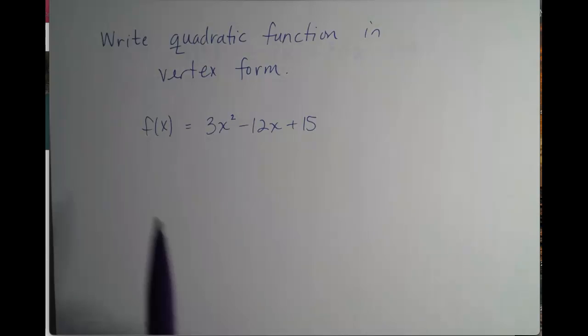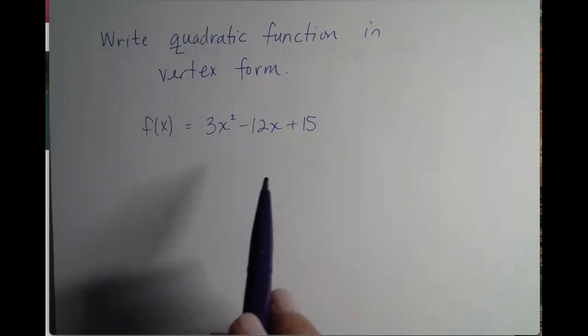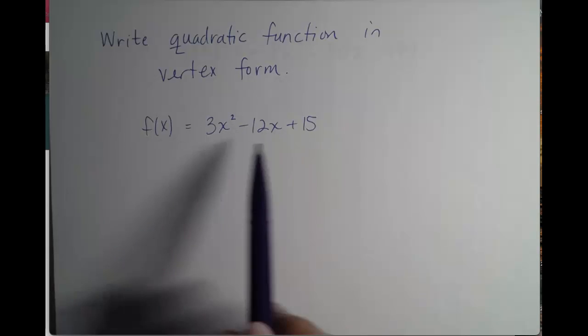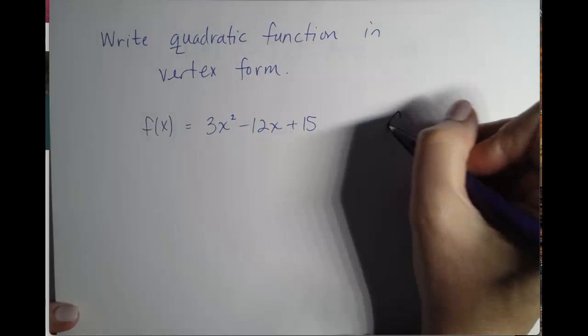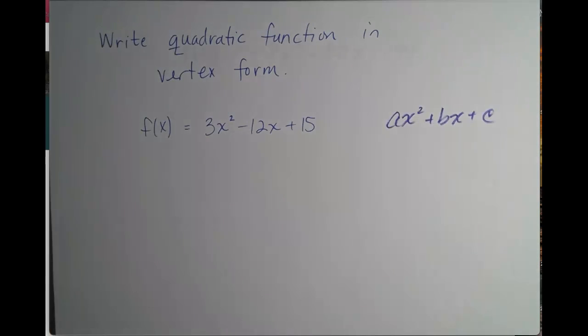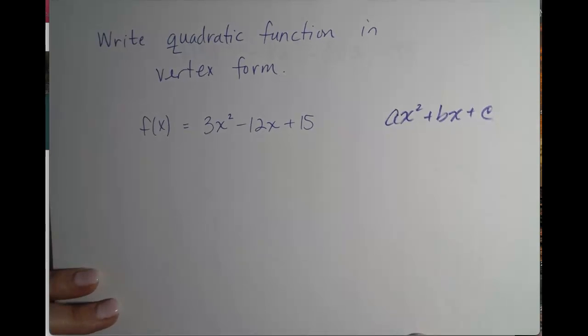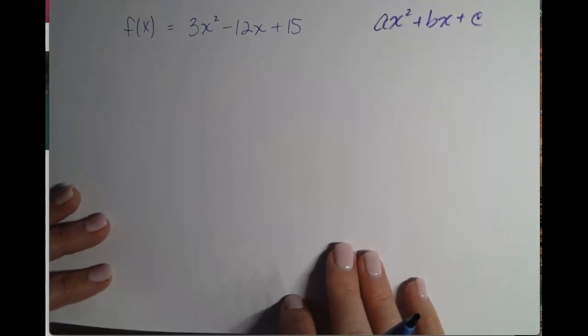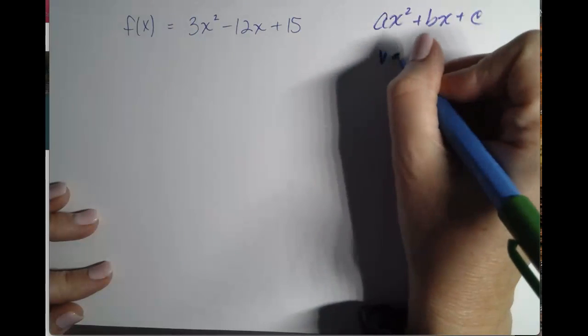Today we're going to be writing this particular quadratic function in vertex form. This is in quadratic form, and remember quadratic form is ax squared plus bx plus c. So we want to change it to the vertex form, and if you don't have this written down, take the opportunity to please do it. So we want to go from the quadratic form, we want to rewrite it in vertex form.